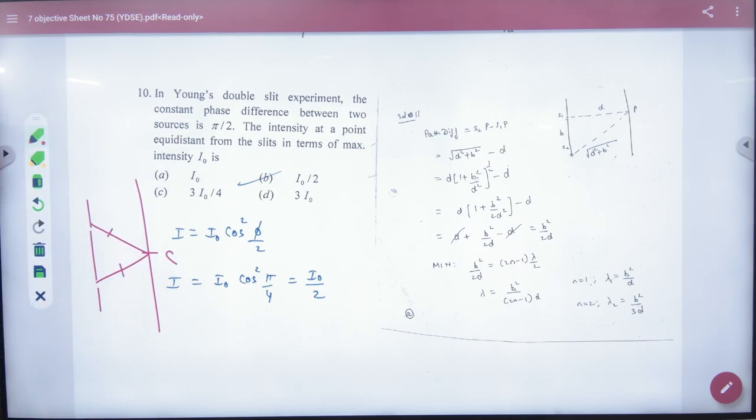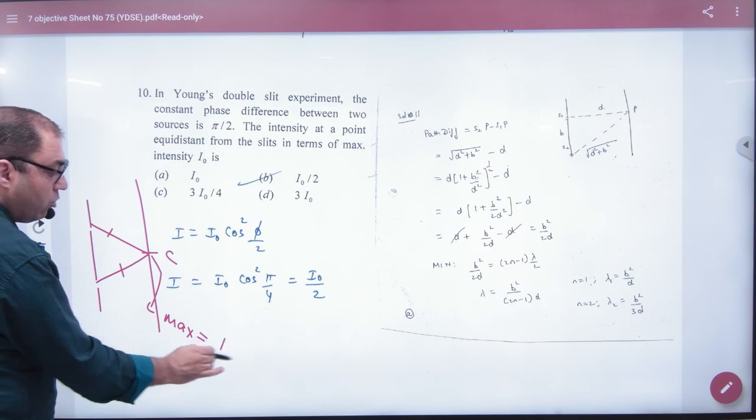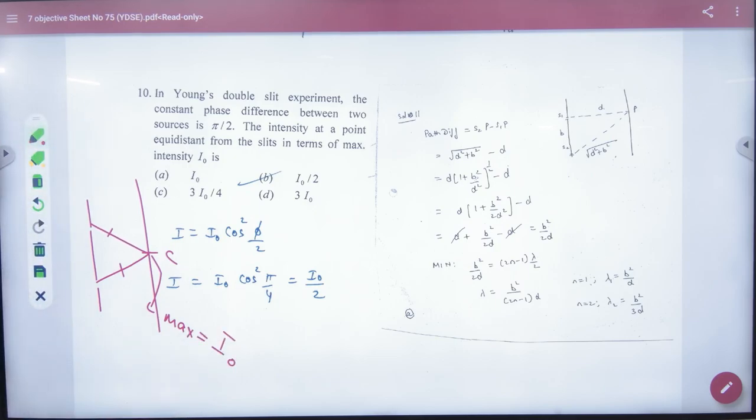What is equidistant? Equidistant is the center point. What is the intensity here? Maximum, it is 4I₀. But what are you talking about? I₀. It's 4I₀, but it's I₀. So your formula has changed.